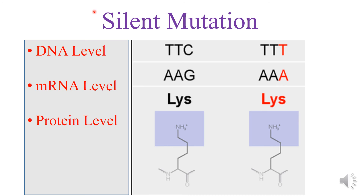Let us see one example of silent mutation. At the DNA level, the bases are TTC or TTT, and at the mRNA level, it is AAG and AAA. But both these codons are for the same amino acid — lysine — in a protein. So because of this flexibility at the third position, even if there is a mutation at the third position, it does not bring about a change in the amino acid. This mutation is therefore equivalent to a silent mutation — even though there is a change, it does not result in a change in the sequence of amino acids in the protein.